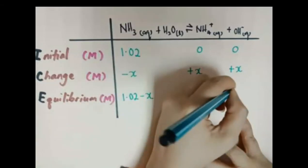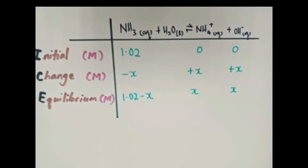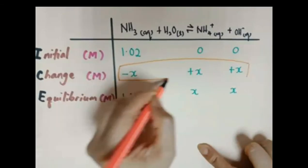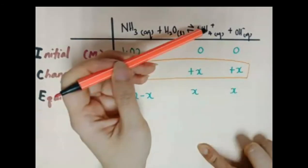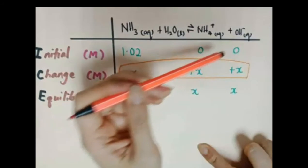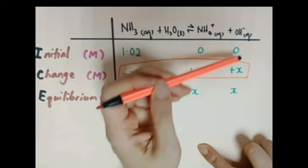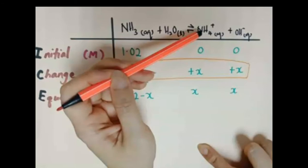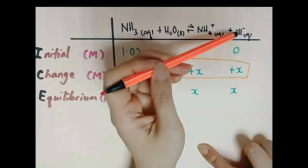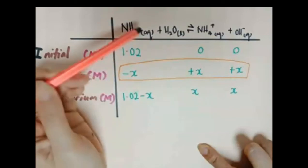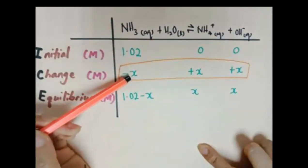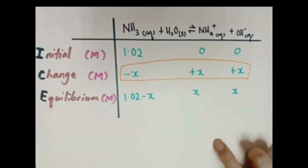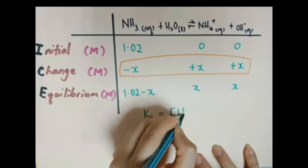For the forward reaction, the change will be negative x, plus x, plus x. Let's complete the concentration at equilibrium. The change in concentration for each species depends on its stoichiometric coefficient. For ammonia, the stoichiometric coefficient is 1, so we write negative 1x. If the coefficient were 2, we would write minus 2x.